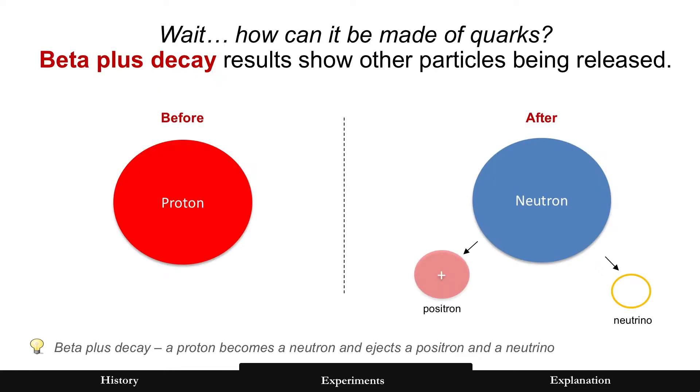Oh, but wait. How can a proton really be made of quarks? Because decay results and other experiments show very different particles that are being released.